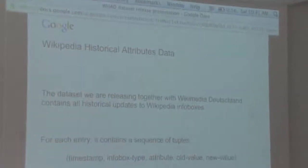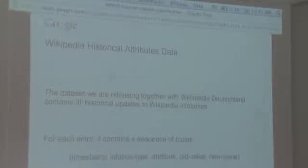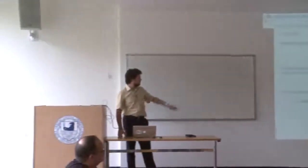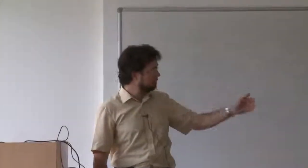For all these reasons, we are releasing these datasets together with Wikimedia Deutschland. In this dataset, we are providing all the historical edit history updates to Wikipedia Infoboxes. For each entry, you can imagine it as a set of tuples where the most important information is the timestamp when a change happened, the Infobox type, the attribute that is being changed, what was the old value, and what is the new value of the attribute.